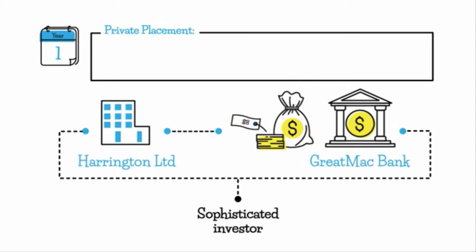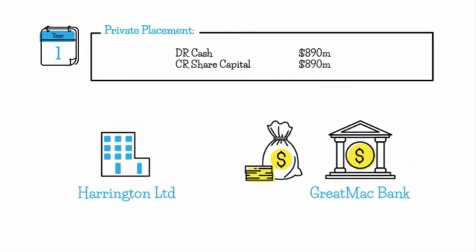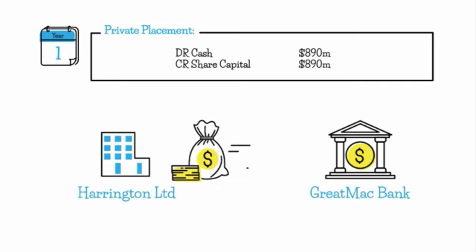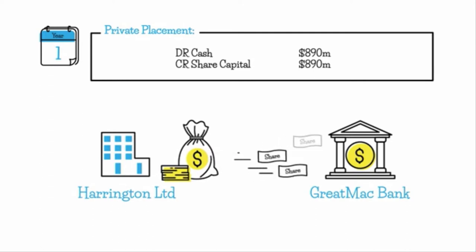That leads us to how we treat this particular equity transaction. We're going to skip having to do a prospectus and we don't need to use any cash trust account. We go straight to debiting cash $890 million and crediting share capital $890 million — receiving cash from Great Mac Bank, creating equity, and giving Great Mac Bank shares in the company.